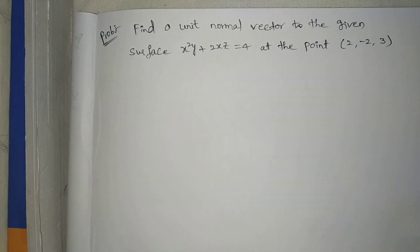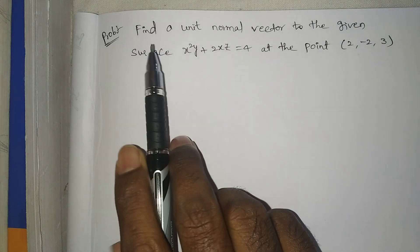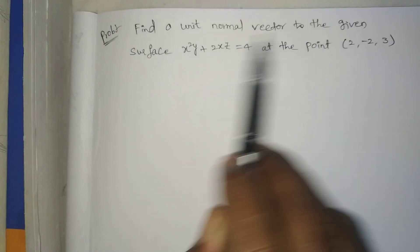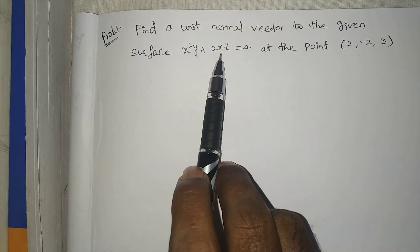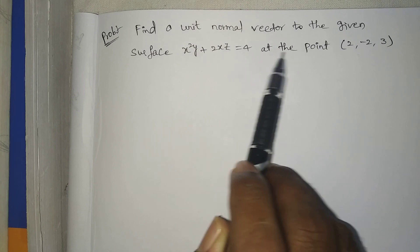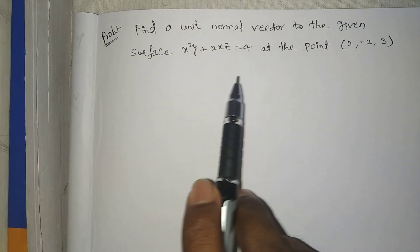Welcome to Roger's degree. Today our topic is vector differentiation. The problem is: find a unit normal vector to the given surface x squared y plus 2xz equals 4 at the point 2, minus 2, 3.